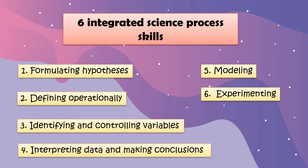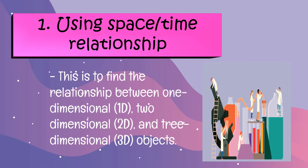Now let's go to the six integrated science process skills. Number one: formulating hypothesis. Number two: identifying operationally. Number three: identifying and controlling variables. Number four: interpreting data and making conclusions. Number five: modeling. And the last, number six: experimenting. I will explain some of them.